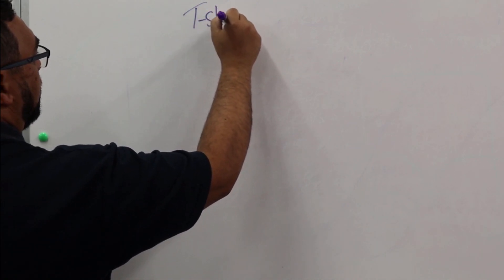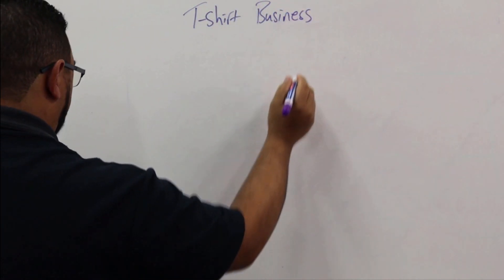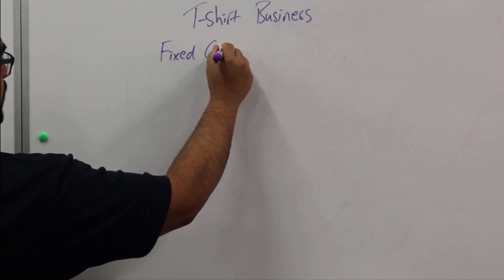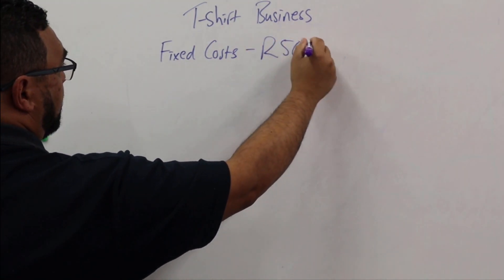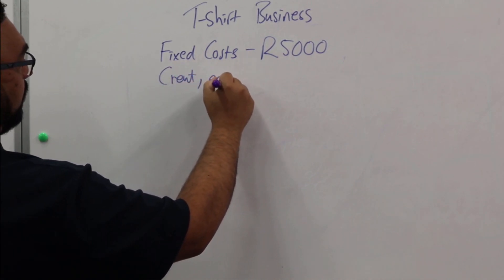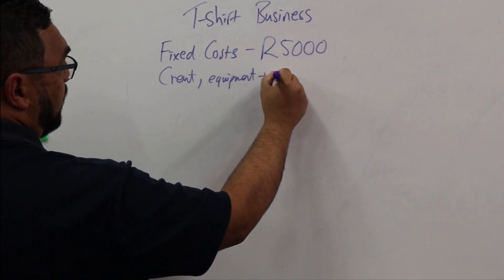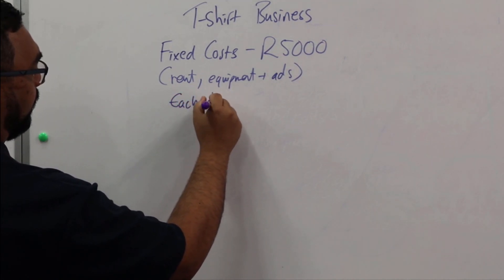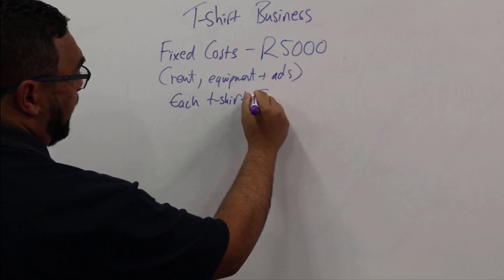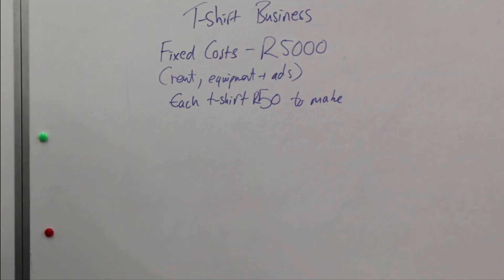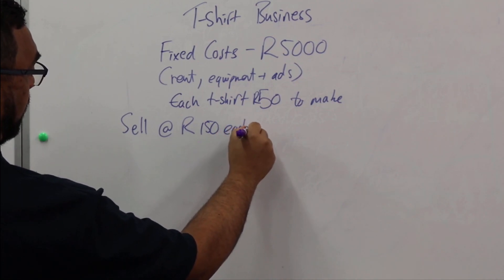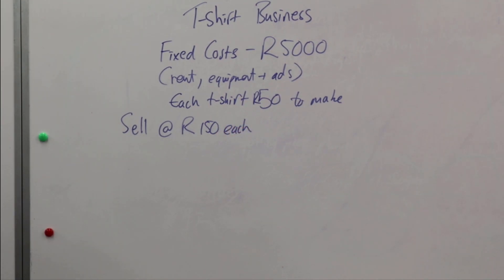In example number two, we're going to level up a little bit — we spoke about t-shirts. I'm going to start a t-shirt business. My fixed costs — which include rent, equipment, and advertising — total 5,000 rand. Each t-shirt costs 50 rand to make, and I'm selling them at 150 rand each. So now I've got these details and I need to work out my break-even point.